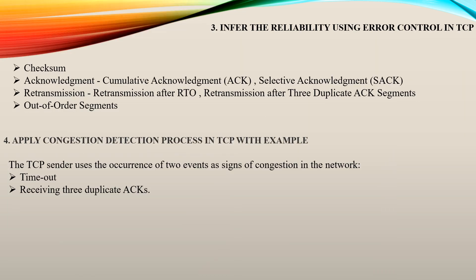Next question: infer the reliability using error control in TCP. Error control in TCP provides reliability through checksum, using zeros and ones to check whether there is any error in the sent bits. It also follows acknowledgement, which is divided into two types: cumulative acknowledgement, where acknowledgement is checked cumulatively, and selective acknowledgement, where acknowledgement is done selectively.